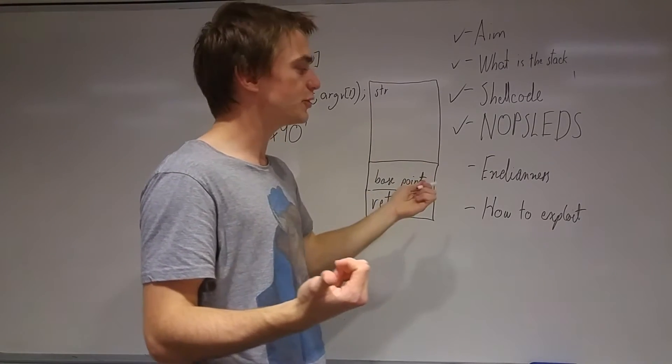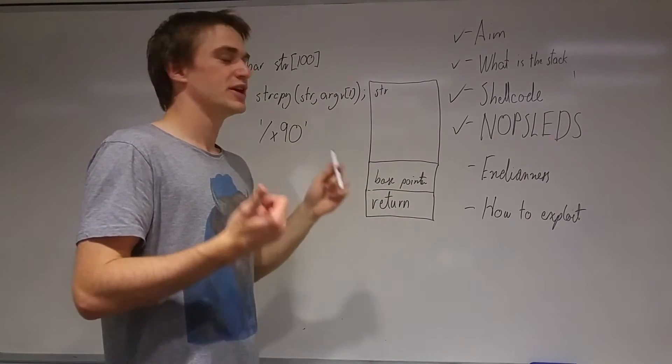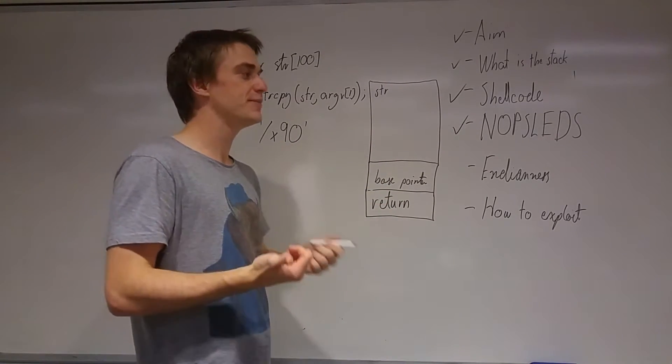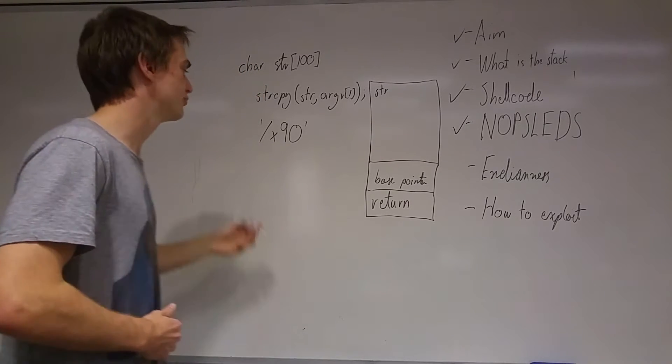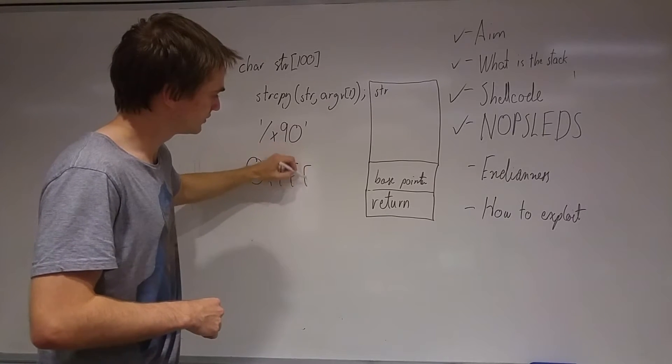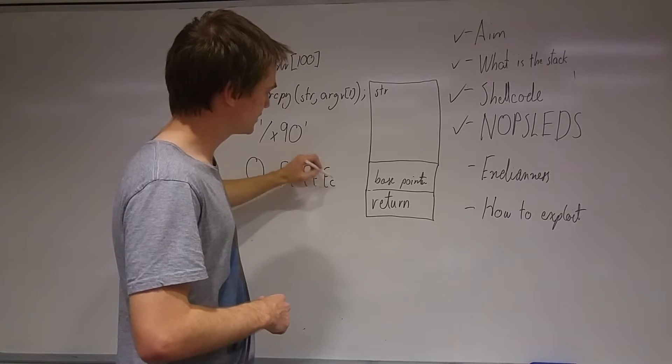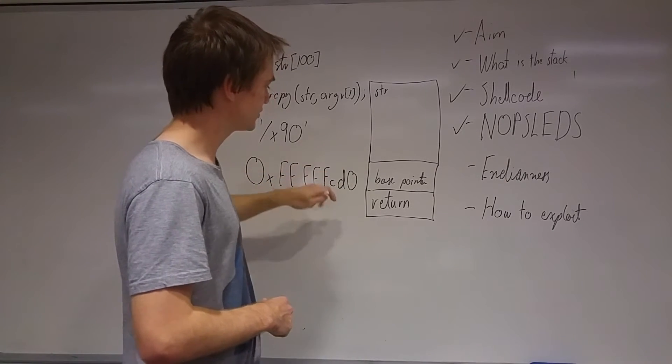Okay, final thing before we actually go over how to exploit it is endianness. In a lot of these exploits you may be a little bit confused why if we have an address which is, for example, 0xFFFFCD0...